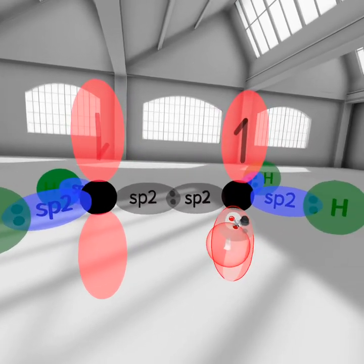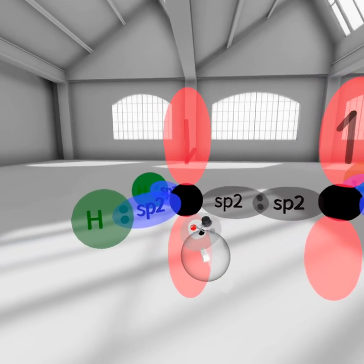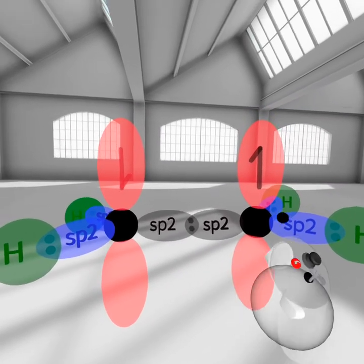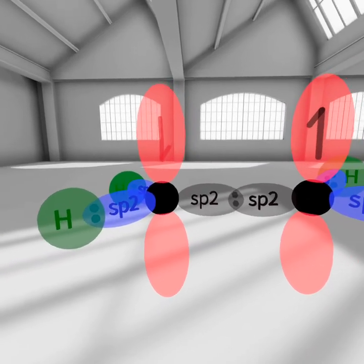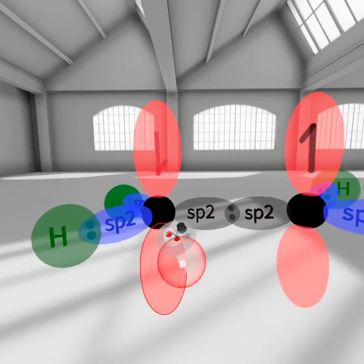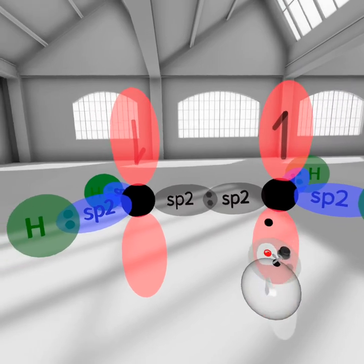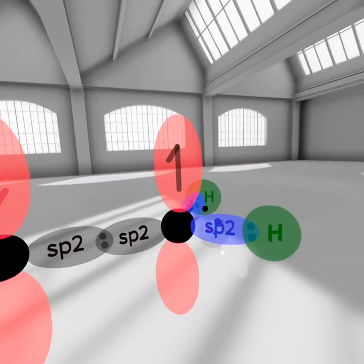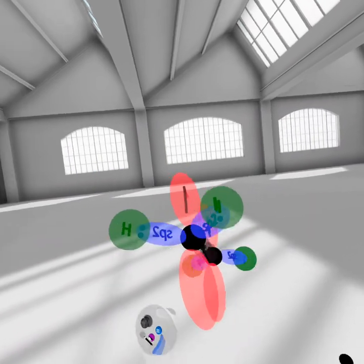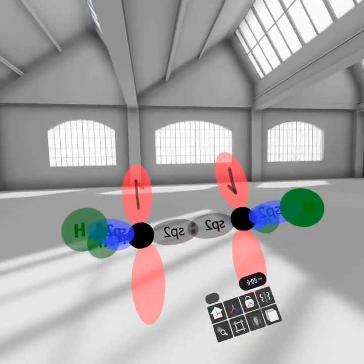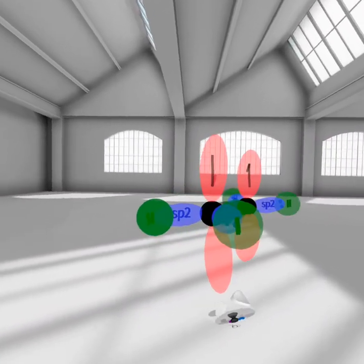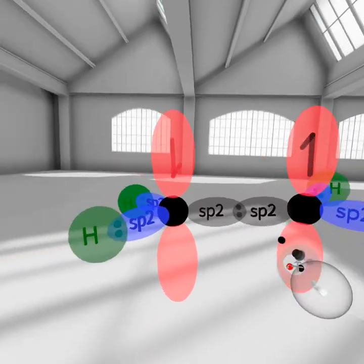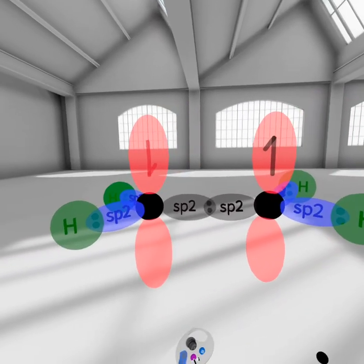We have sp2 hybridized carbons represented by the black spheres here. If these are sp2 hybridized, that means they have three sp2 orbitals, and the geometry is trigonal planar around these carbons. So everything is planar — all of these sp2 orbitals are in the same plane. That means this black bond and the bonds to the hydrogens are all in the same plane.